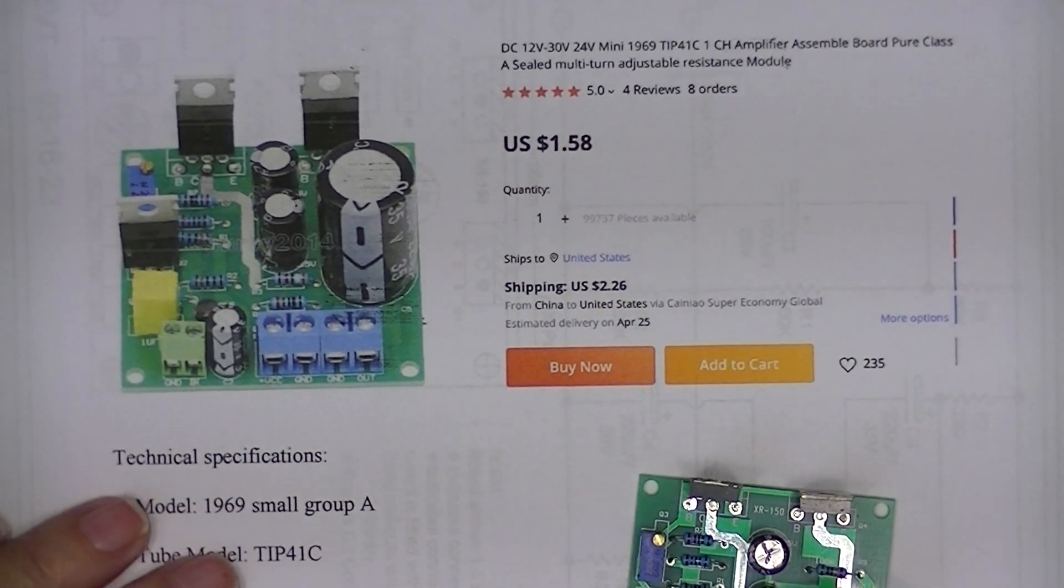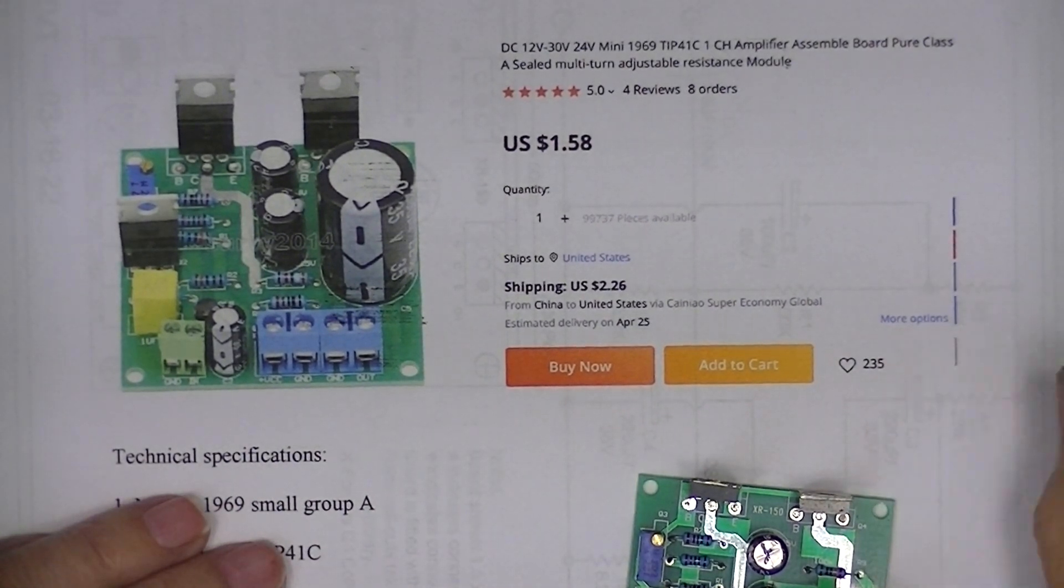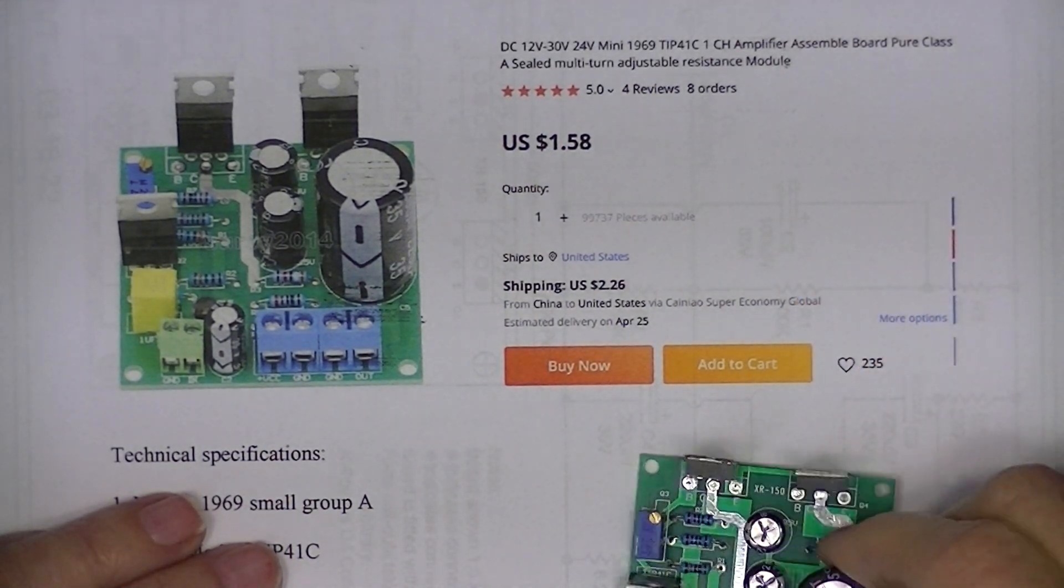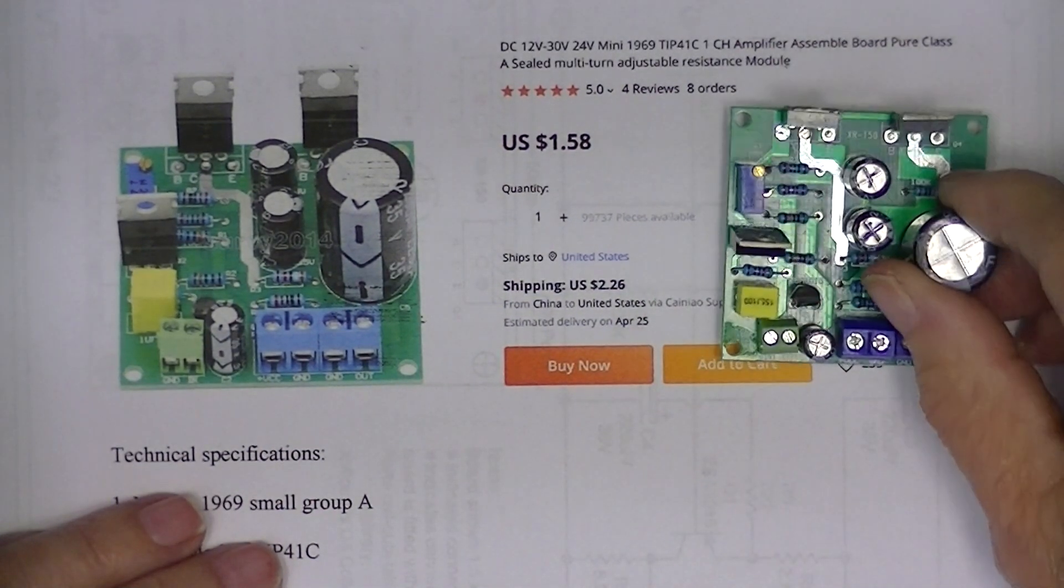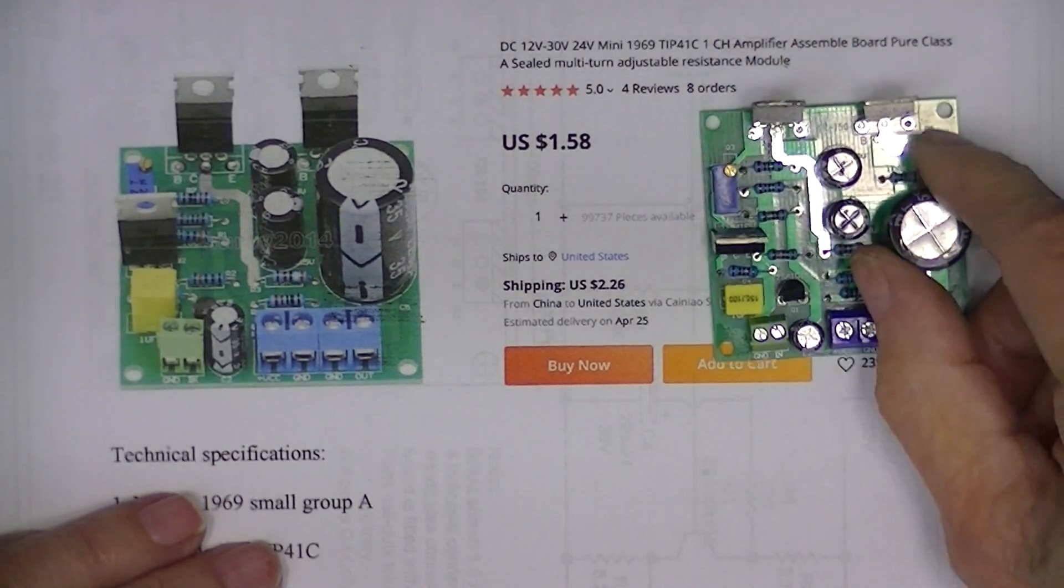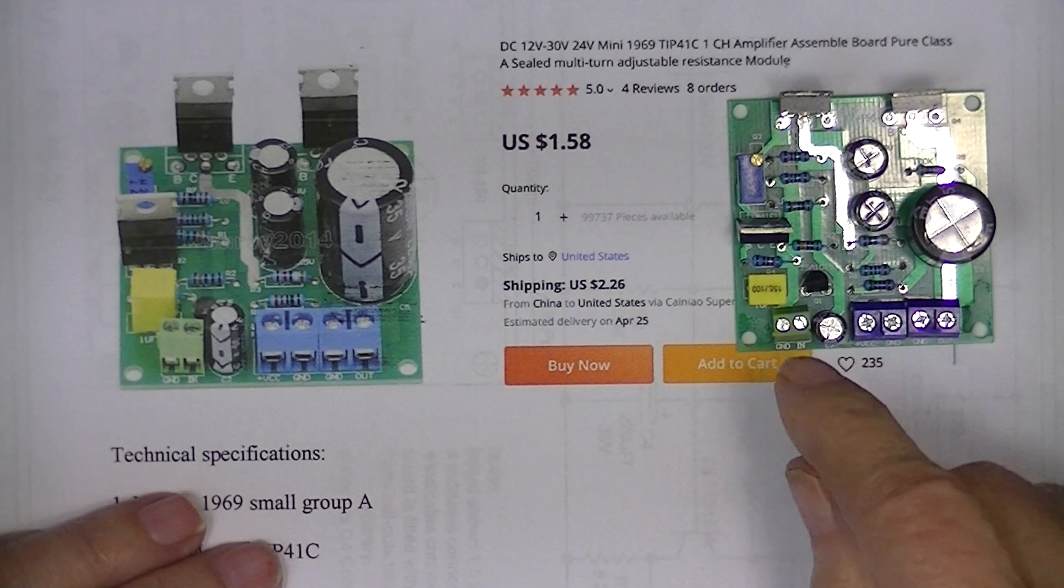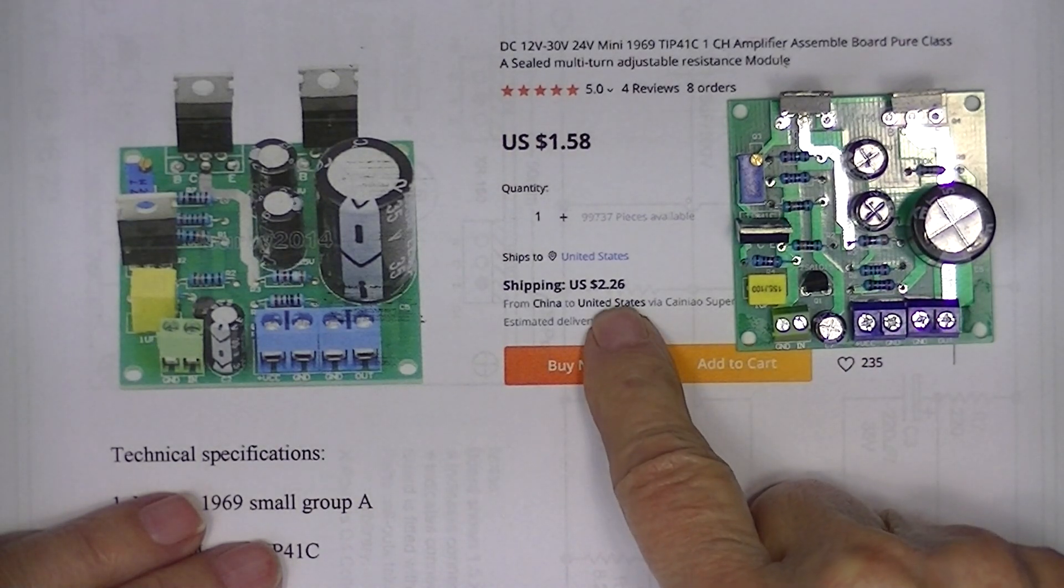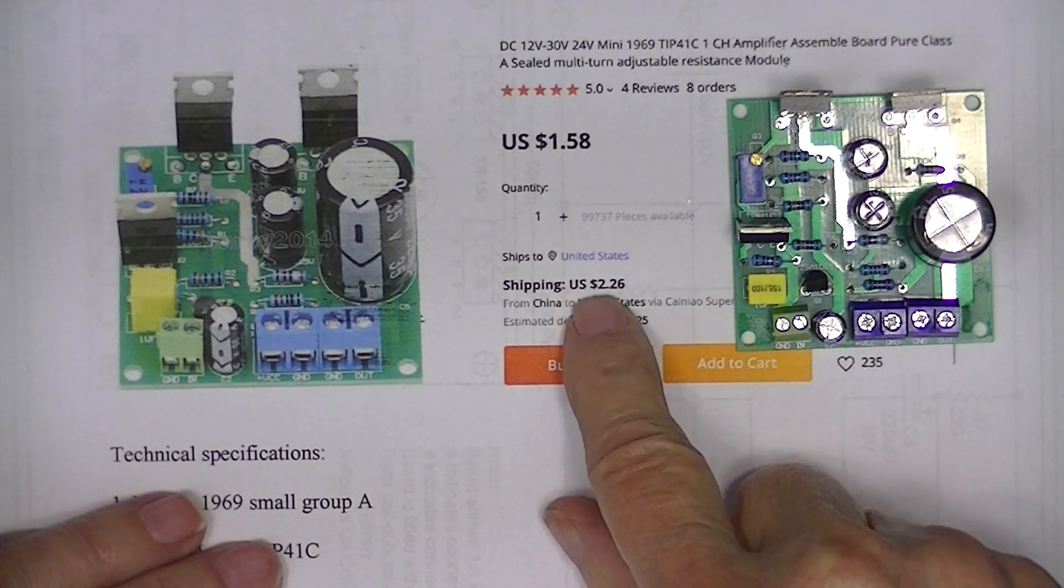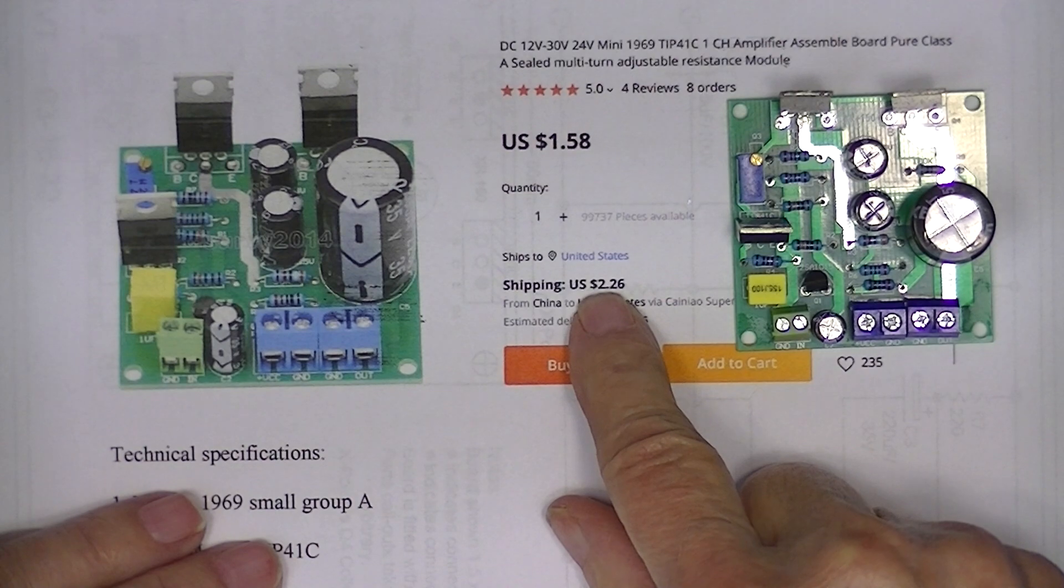The first of these JLH69 amplifiers that I'm going to test is this one. It came fully assembled from Aliexpress. It cost less than $4, $1.58 for the amplifier and $2.26 shipping.